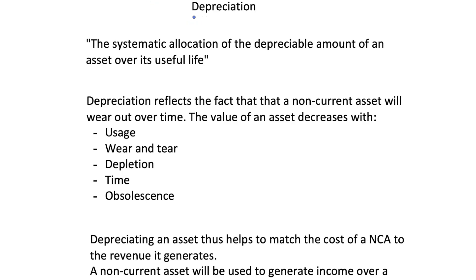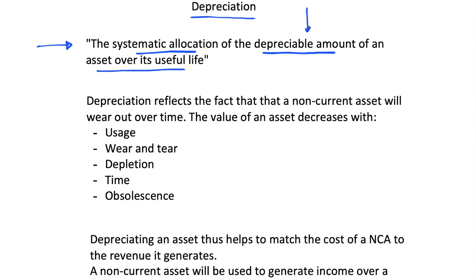In this video we will be looking at depreciation and getting an introduction to depreciation as an accounting concept. The textbook definition of depreciation is the systematic allocation of the depreciable amount of an asset over its useful life. It's simply saying that an asset over time will decrease in value, and we're going to allocate this depreciable amount over the course of an asset's useful life — over the course of time that we're actually using our assets.